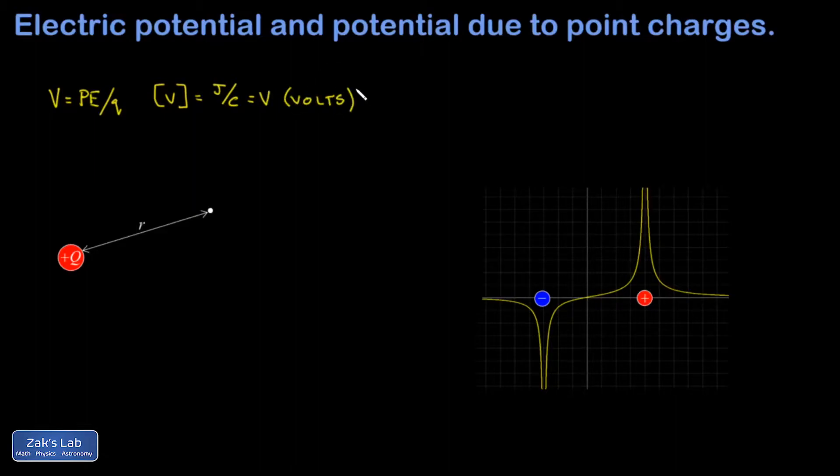So at some point in space around some charge distribution, what the potential tells you is how much potential energy you would get for every coulomb of charge you stuck there to interact with that charge distribution.